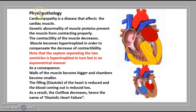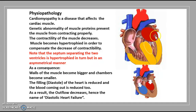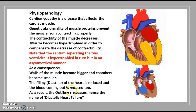Moving on to the physiopathology: cardiomyopathy is a disease that affects the cardiac muscle. Genetic abnormality of muscle proteins prevents the muscle from contracting properly, decreasing contractility. The muscle becomes hypertrophied in order to compensate for the decrease in contractility. The septum separating the two ventricles is hypertrophied in an asymmetrical manner. As a consequence, the walls around the ventricles become much bigger and the chambers are much smaller, leaving much less room than in a normal, wider ventricle with thinner walls. The filling — or diastole — of the heart is reduced and the blood coming out is reduced, making outflow decrease.